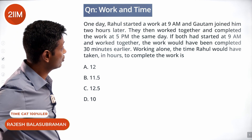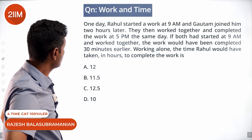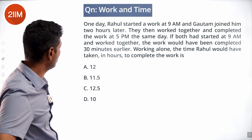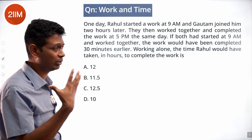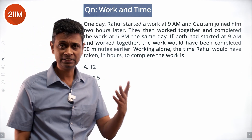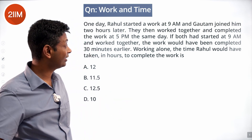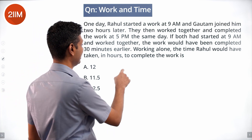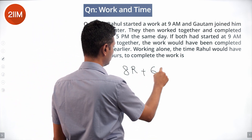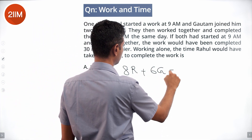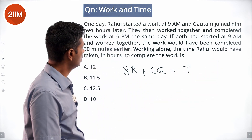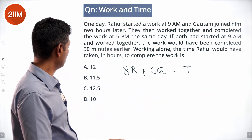One day Rahul started work at 9 a.m. and Gautam joined two hours later. They worked together and completed the work at 5 p.m. Rahul works from 9 to 5 — 8 hours; Gautam works from 11 to 5 — 6 hours. So 8 times what Rahul does per hour plus 6 times what Gautam does per hour completes the task.